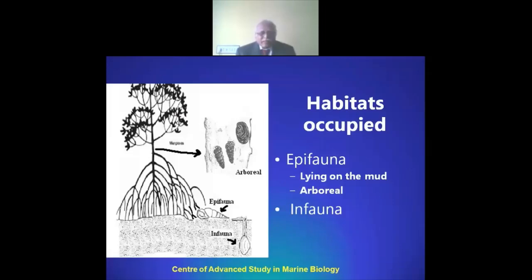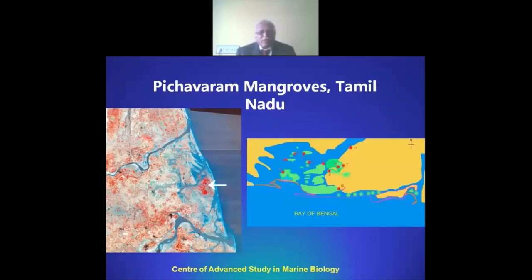If you see the mangrove habitats enjoyed by the animals, we have the epifauna lying on the mud, and then the arboreal pulmonates, which are climbing and moving up and down on mangrove roots and trees and stakes. Another important group is the infauna, which are living in the substratum by burrowing themselves.